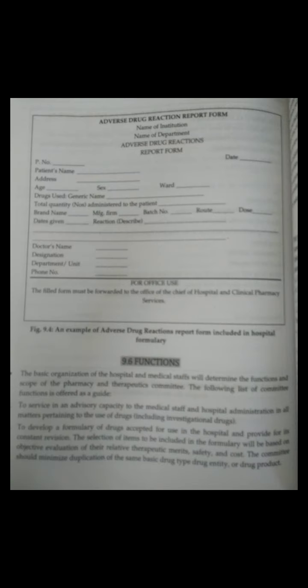Next is the Adverse Drug Reaction report form. This form includes: name of the institution, name of the department, adverse drug reaction report form heading, patient number, patient name, address, age, ward, date, drug used (generic name), total quantity administered to the patient, brand name, manufacturing firm, batch number, route, dose, date given, reaction description, doctor's name, designation, department or unit, and phone number. There is also a section for office use. The filled form must be forwarded to the Chief of Hospital and Clinical Pharmacy Service. This is an example of an adverse drug reaction report form included in the hospital formulary.